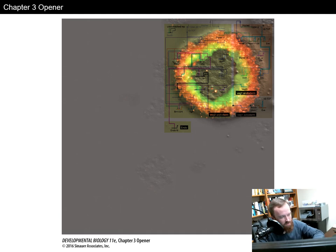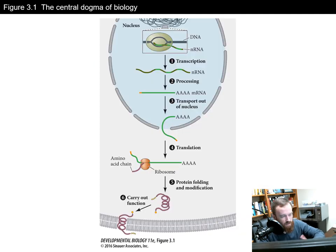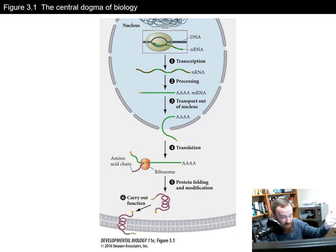Okay everybody, welcome to chapter three. In this chapter we're going to talk about some of the different aspects that underlie cell differentiation. I want to start out by reminding you, or if you haven't had a lot of genetic background, giving you kind of a primer on the central dogma of biology.